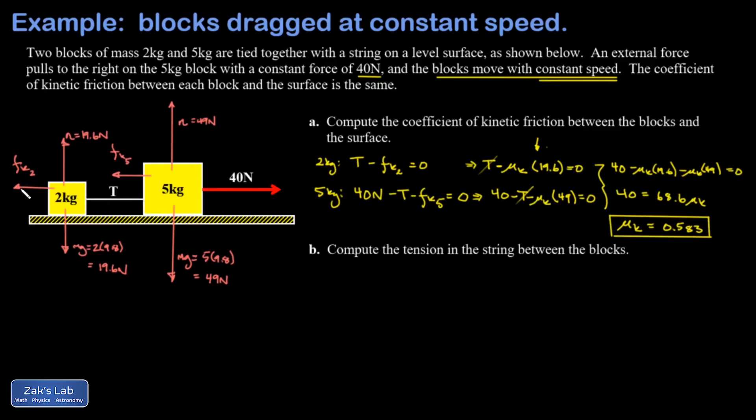It's just T pulling to the right, kinetic friction force pointing to the left, and T has to be equal to the kinetic friction force so that the net force is zero and I get a constant speed. So I'm really just saying T equals fk2, but fk2 is mu_k times the normal force for the 2 kilogram block, which was 19.6. We plug in our friction coefficient of 0.583 and we arrive at a tension of 11.4 newtons.